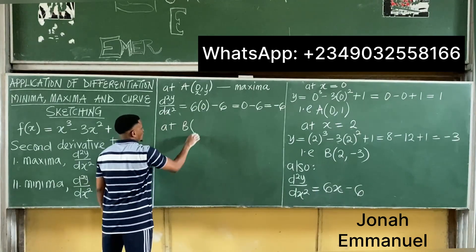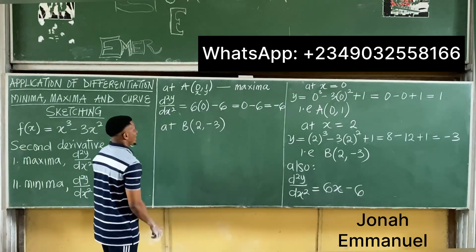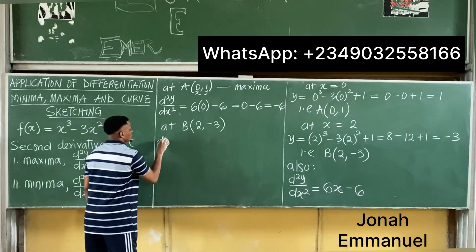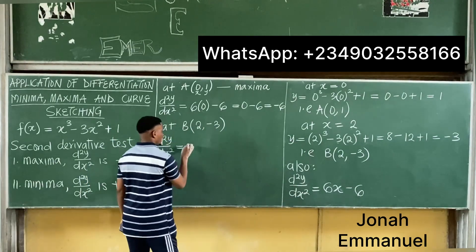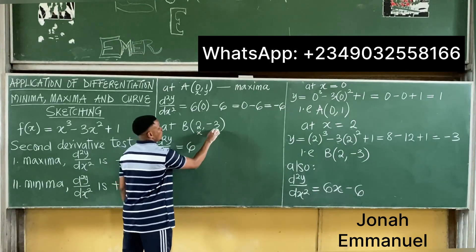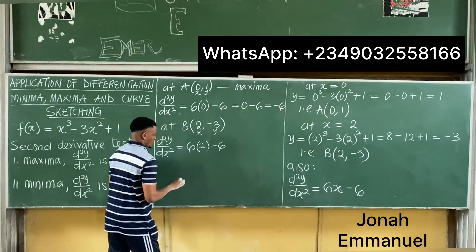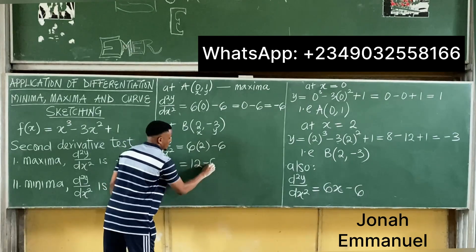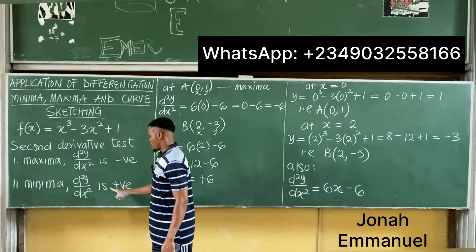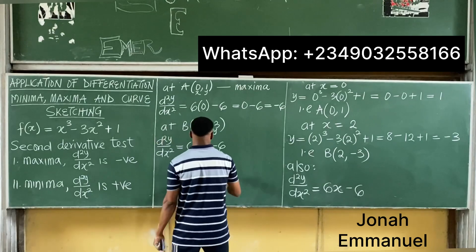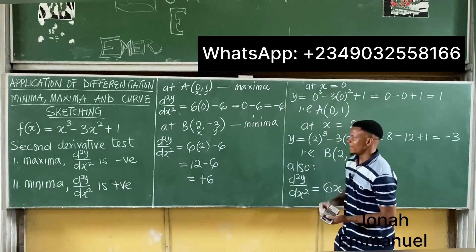At point B, x is 2 and y is minus 3. d²y/dx² equals 6 times 2 minus 6, which is 12 minus 6, equal to plus 6. Since d²y/dx² is positive, that means this point is a minima. So I've gotten my minima and maxima.